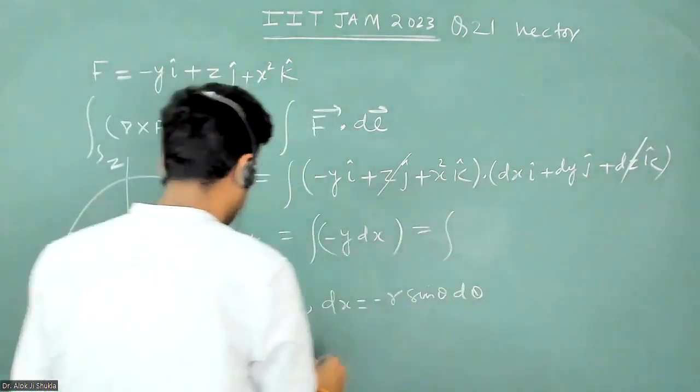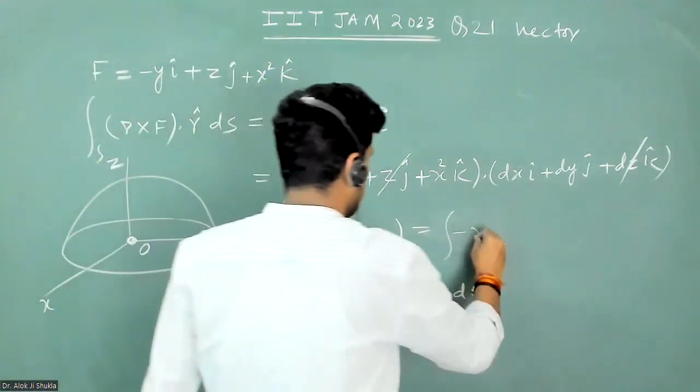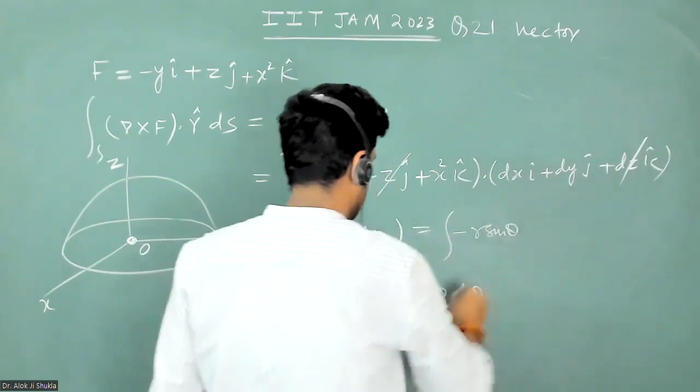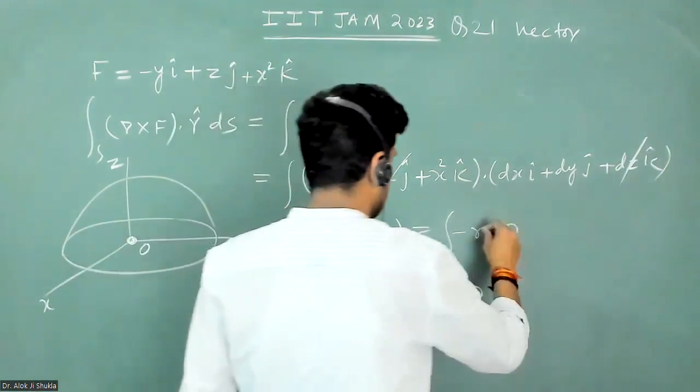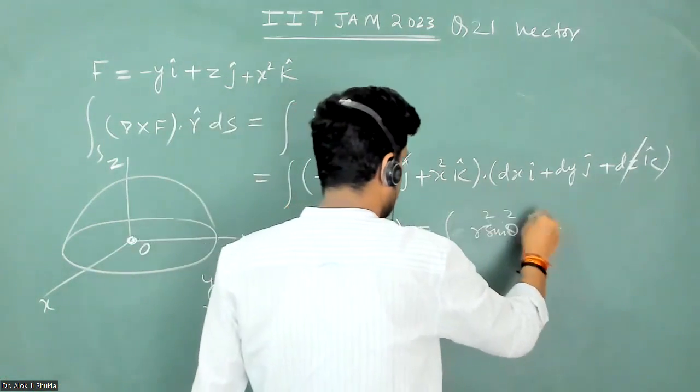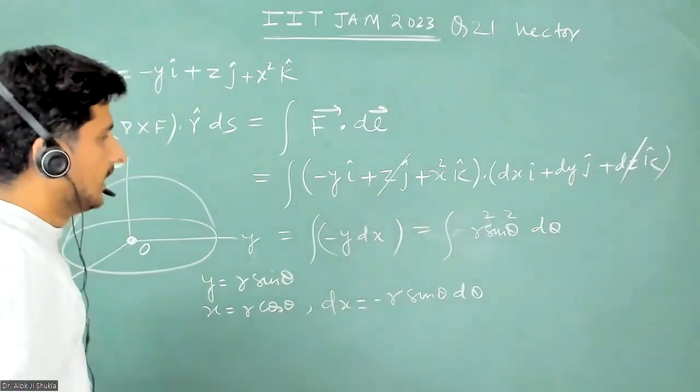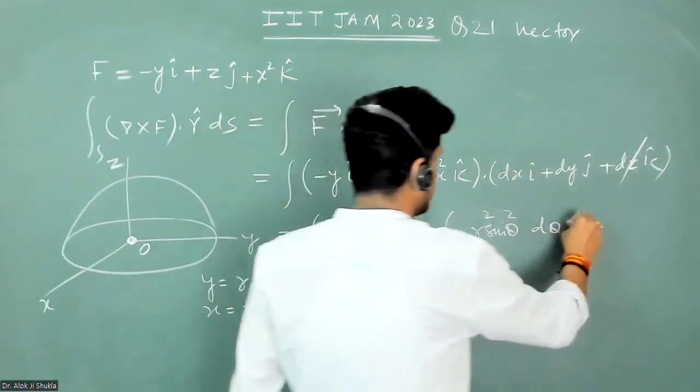integral minus y is r sin theta and dx is minus, minus gives plus r square sin square theta d theta. And this r is constant, so it will be just r square